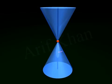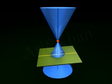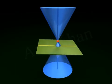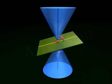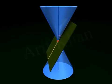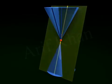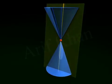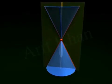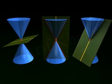Degenerate conics. If the plane intersects the double right circular cone at its vertex, the ellipse becomes a point, the parabola becomes a line, and the hyperbola becomes two intersecting lines. The figures so obtained are called degenerate conics.